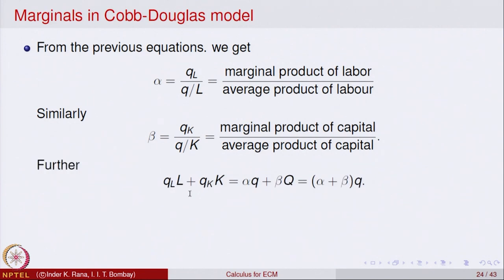If we add these two equations: (∂Q/∂L)·L + (∂Q/∂K)·K = α·Q + β·Q = (α + β)·Q. Note that small q is the same as capital Q — that is only a notation. So the marginal product of labor times L plus the marginal product of capital times K equals (α + β) times Q.